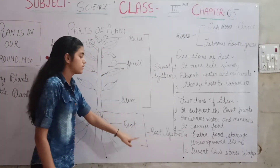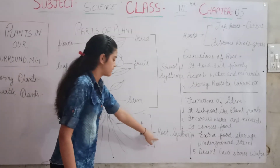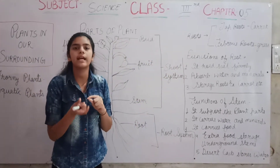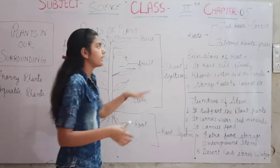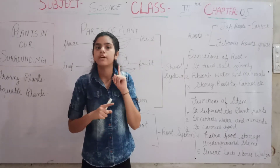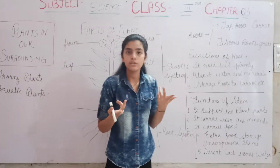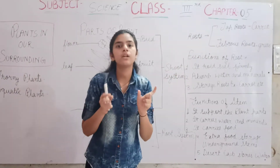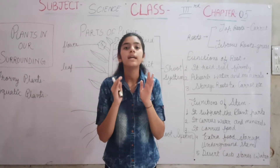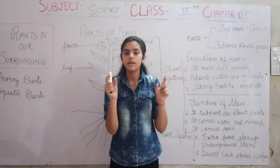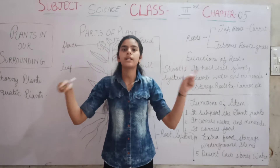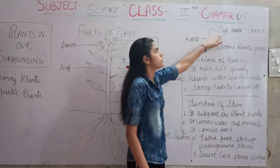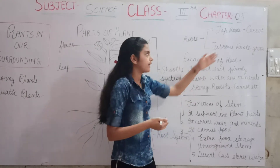Now we will learn about the root system. The root system has only one part: roots. Roots are small hair-like structures present under the soil. Roots are divided into two parts: tap roots and fibrous roots. Tap roots are long and thick. There is a main root, and smaller roots go in all directions. Examples of tap roots include beet root.